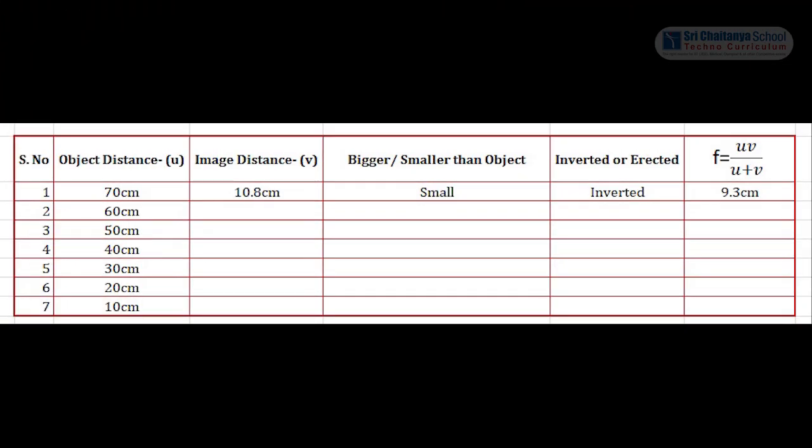Now note down the values in the given table. Object distance is 70 cm, image distance is 10.8 cm, and the focal length calculated from the formula is 9.3 cm.